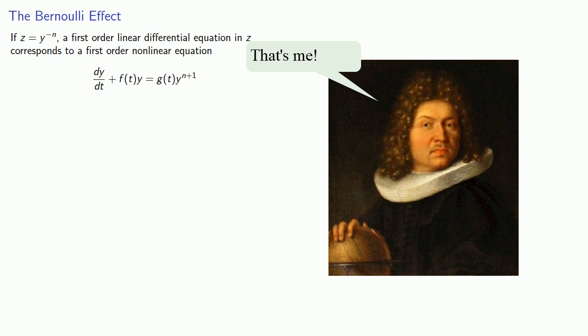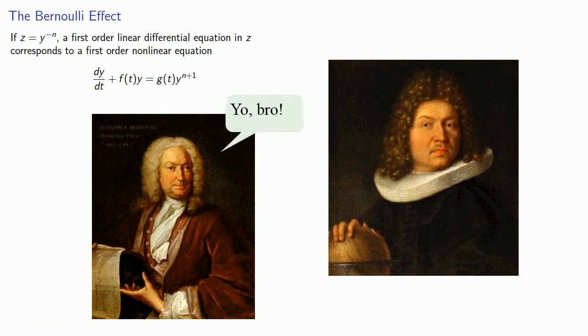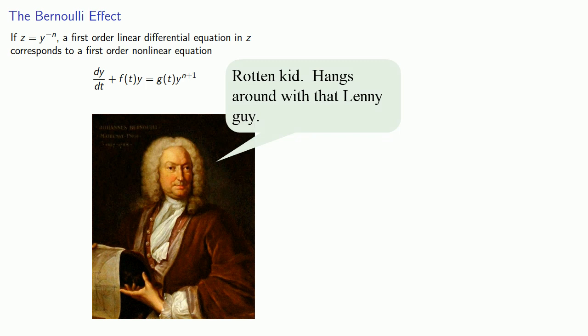And this is known as a Bernoulli equation, after Jakob Bernoulli, the eldest member of a family of Swiss mathematicians of the early 18th century. Sibling rivalry and intergenerational jealousy caused many members of the Bernoulli family to become quite prominent in mathematics and physics. The Bernoulli family put the functional in dysfunctional.